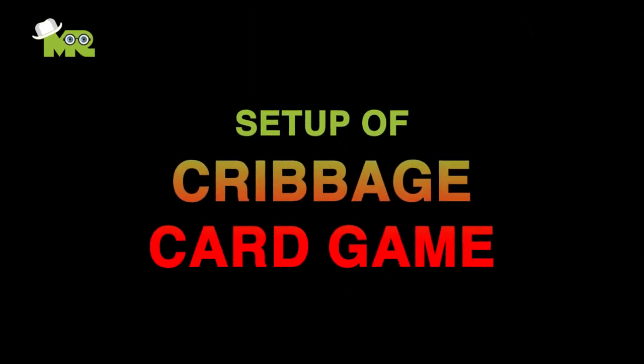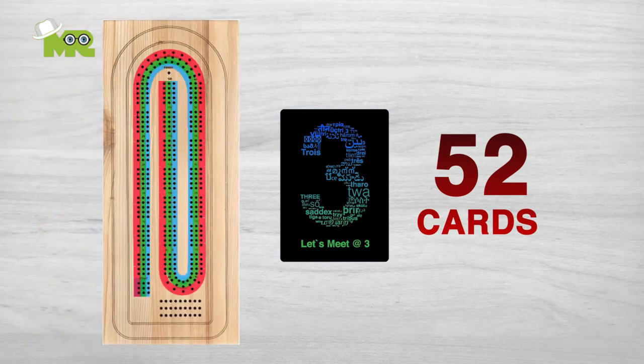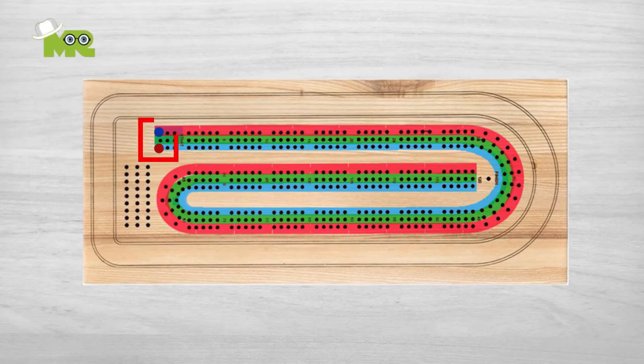The setup of cribbage. A standard deck of 52 cards and a cribbage board including pegs are required. The cribbage board is set up with two pegs of each color placed in the zero or resting spot on the board.